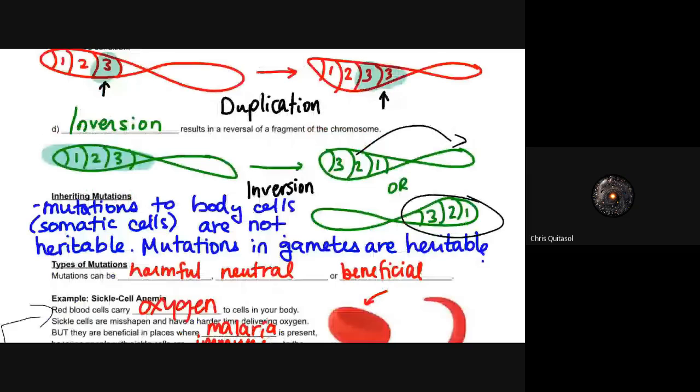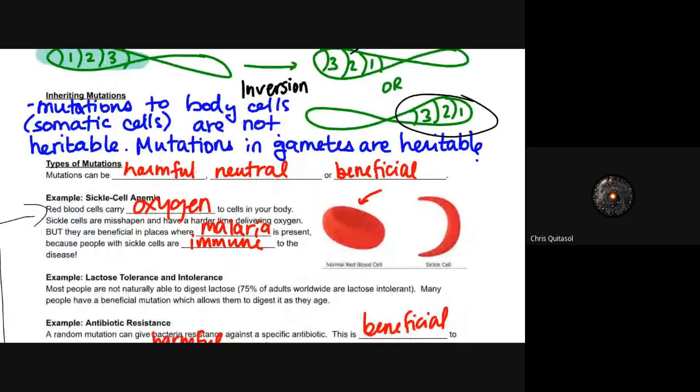When we look at inheriting mutations, mutations to body cells, those somatic cells, skin cells, hair, lungs, kidney, what have you, they're not heritable. Mutations to gametes are heritable. The only way with which you can pass on a mutation that's taken on in the wild, so to speak, from experience in living and what have you, is if that mutation is to the gamete in the reproductive organs.